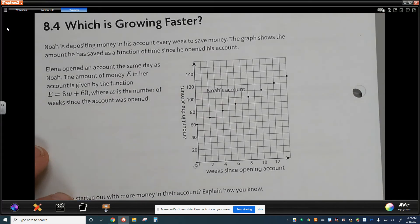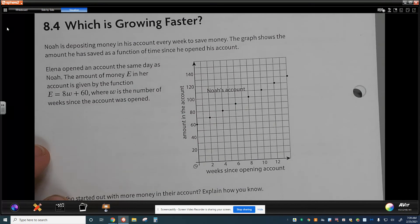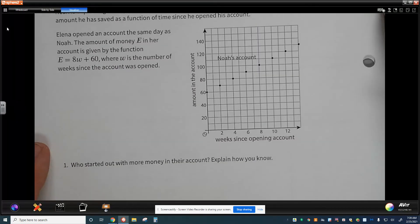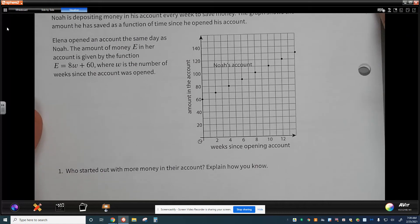Noah is depositing money in his account every week to save money. The graph shows the amount he saved as a function of time since he opened his account. Elena opened an account the same day as Noah. The amount of money, E, in her account is given by the function E equals 8 times W plus 60, where W is the number of weeks since the account was opened.